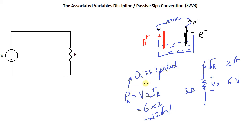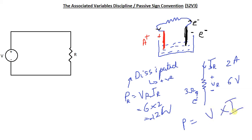So we followed this convention for a resistor, calculated the power dissipated, and it turned out positive. To keep things consistent, we follow the same convention for every device. By convention we always say the current flows into the positive terminal. This means if the voltage and current are defined following the passive sign convention, all we do is multiply voltage by current — no extra signs needed.